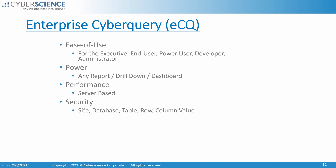Fourth is security — users can secure data at the site level, at the database level, all the way down to the table row and even column value level. Site A can only see site A data, B can only see B, and corporate can see all sites. You can also do security by sales rep, where a given rep can only see his or her sales.